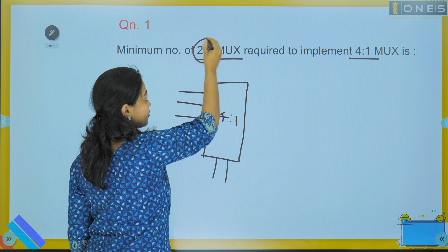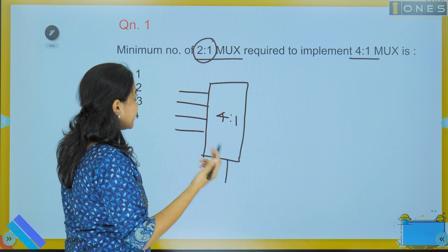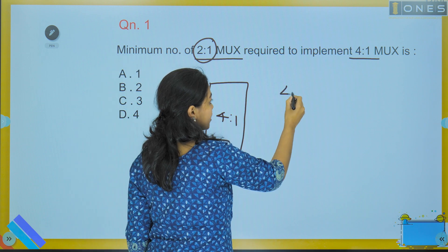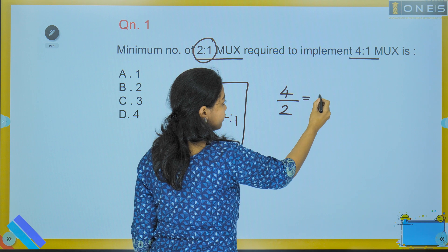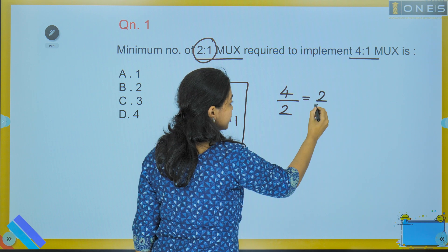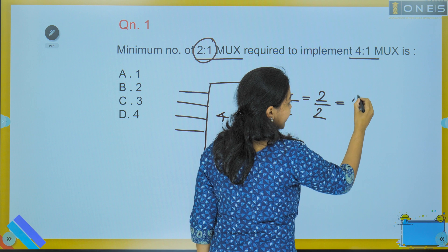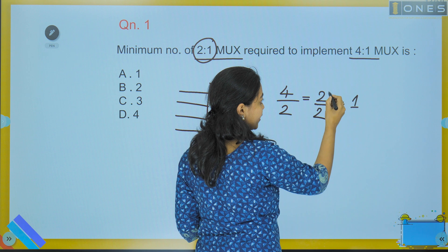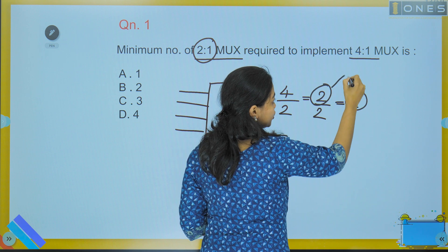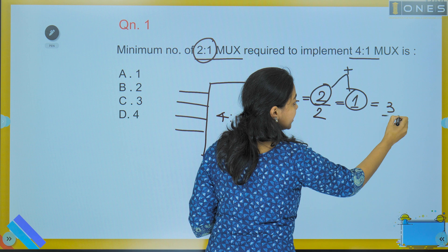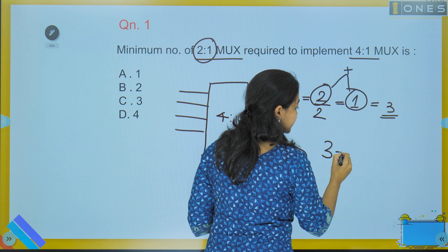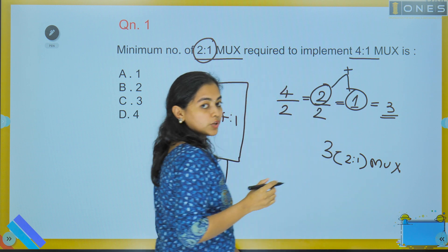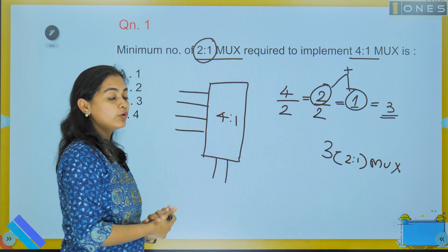Now with a 2-to-1 mux design, what do we do first? First we do 4 divided by 2, so you get 2. Again divide by 2, you get 1. We continue dividing until we reach 1, then we stop. Next, you add these values: 2 plus 1 equals 3. That means you need 3 two-to-one muxes to implement a 4-to-1 mux.